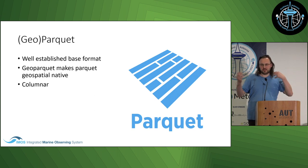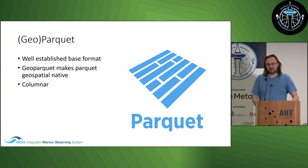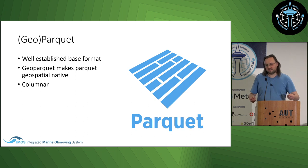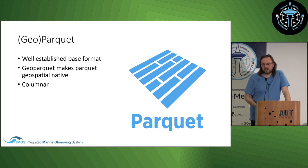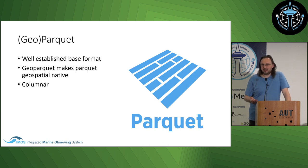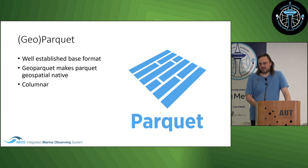With a data lake, when someone needs to mix data from different sources, they can do that. GeoParquet makes the Parquet standard geospatially native, allowing a column that provides geographic details. Importantly, GeoParquet is columnar — you can have as many columns as you want without impacting efficiency, because users only access the columns they need. So if there are a thousand other parameters alongside temperature, users only look at the temperature column and those other columns don't affect performance.